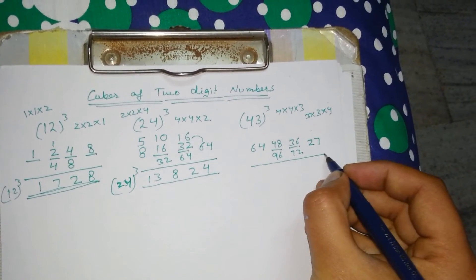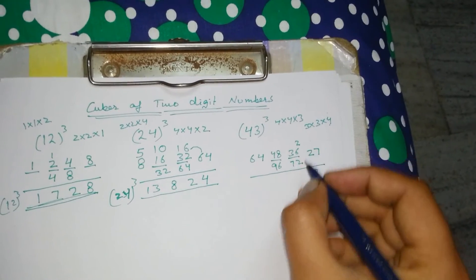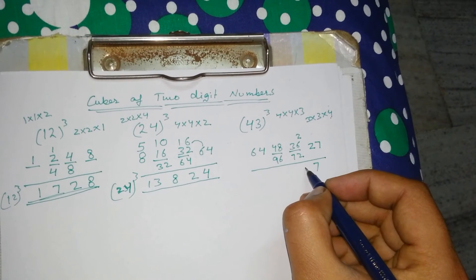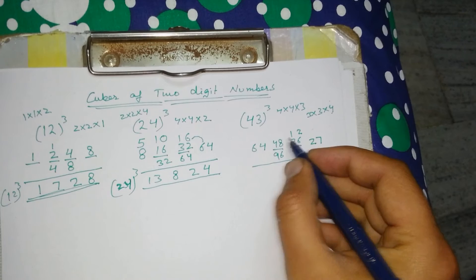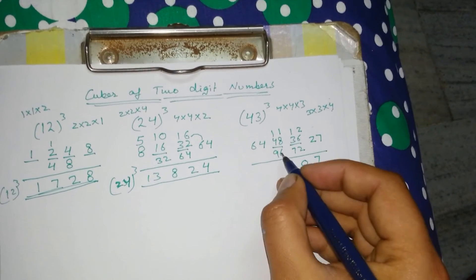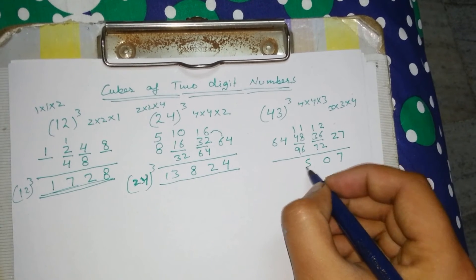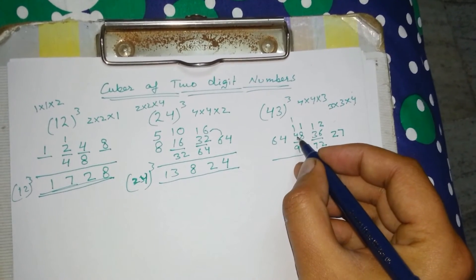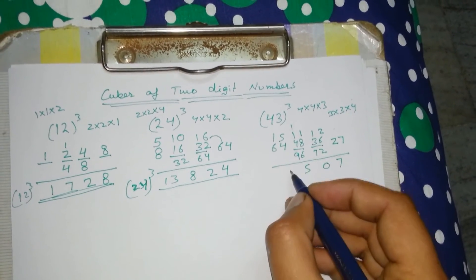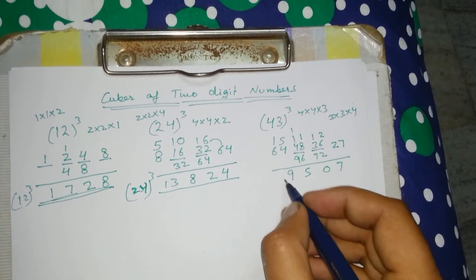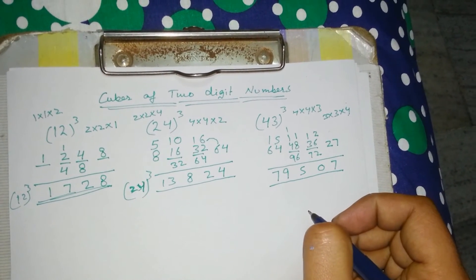Now add these digits. From 27 write 7, carry 2. Then 6 plus 4 is 10; write 0, carry 1. Then 7 plus 3 is 10, plus 1 is 11; write 11. Then 8 plus 6 is 14, plus 1 is 15; carry 1. Then 9 plus 4 is 13, plus 2 is 15; write 5. Then 6 plus 1 is 7. The answer is 79507.